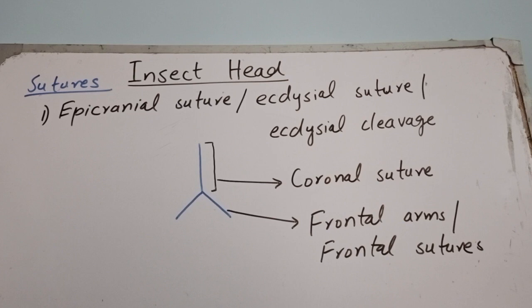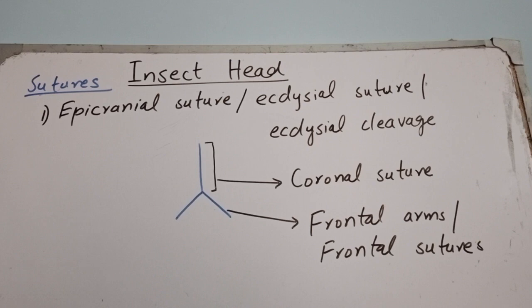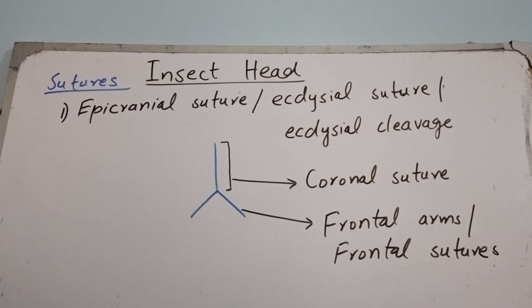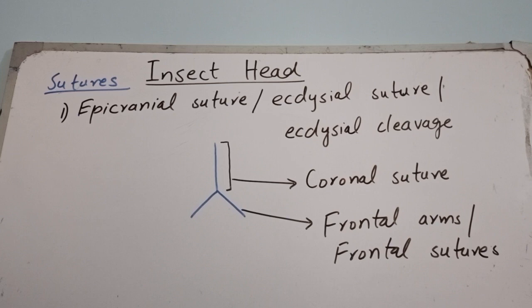The first suture is known as the epicranial suture, also called the ecdysial suture or ecdysial cleavage. This suture is an inverted Y-shaped structure: the straight line is known as the coronal suture and the two arms are known as frontal arms or frontal sutures. This suture splits during molting, allowing the young insect to emerge during ecdysis. It is reduced or even completely absent in adult insects.